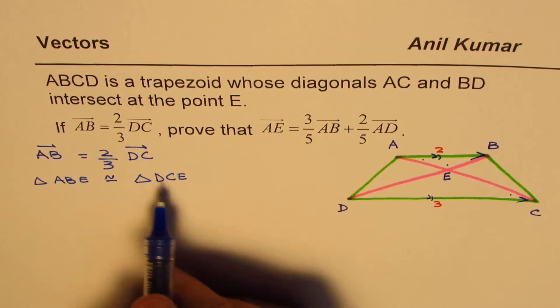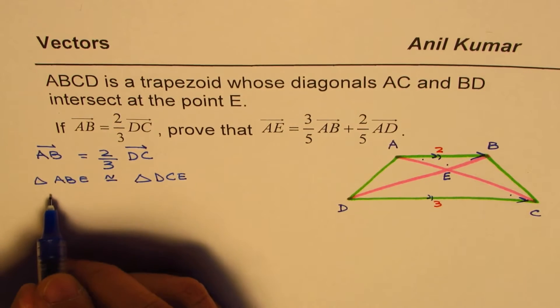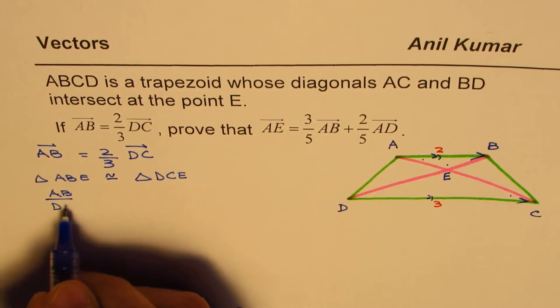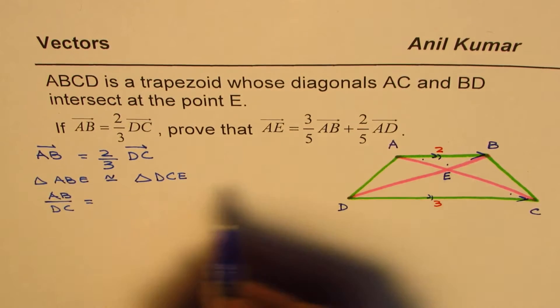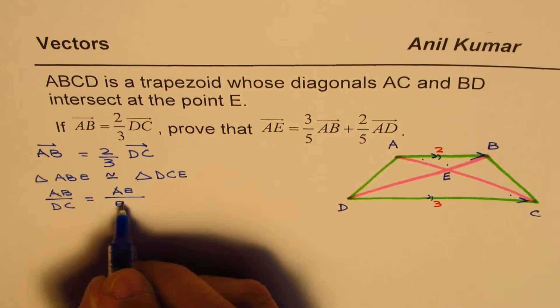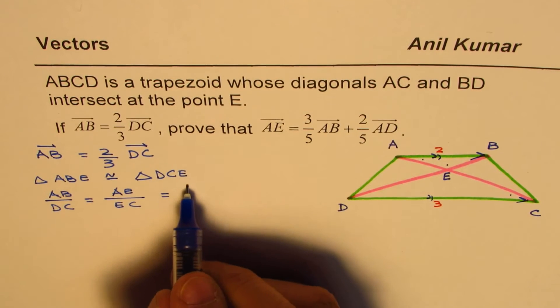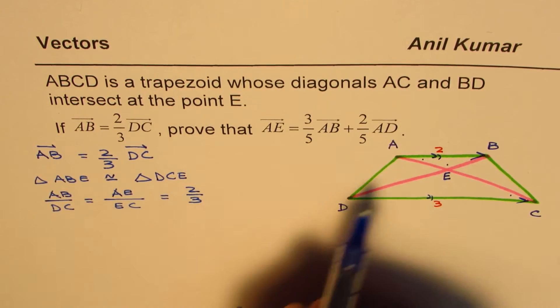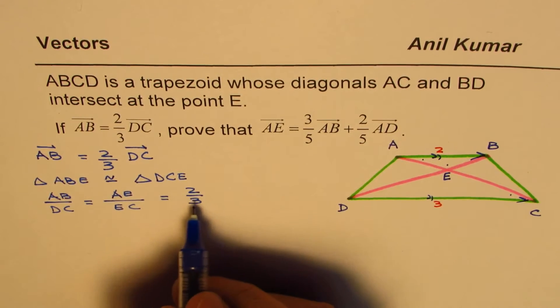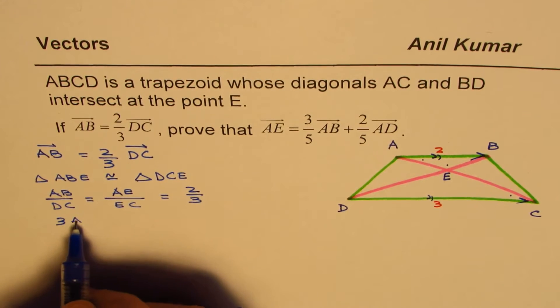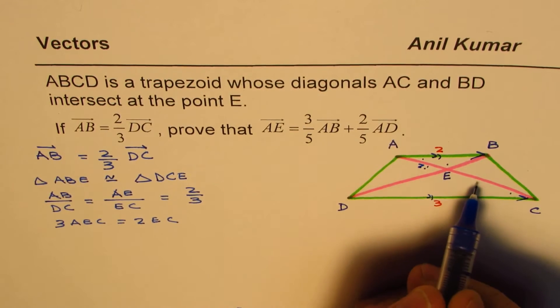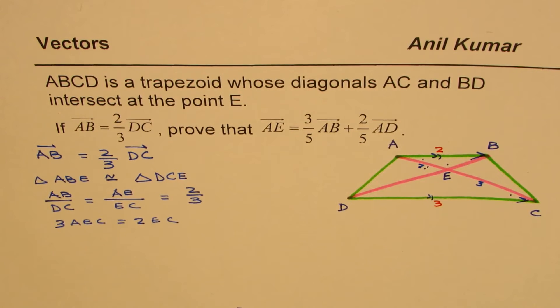Now in similar triangles, ratio of sides are same. So we have AB over DC should be equal to AE over EC. And this ratio is given to us as 2 over 3. That means AE is to EC is also in the ratio of 2 is to 3. So that means you can say 3AE equals 2EC. So this ratio is also in the ratio of 2 is to 3.